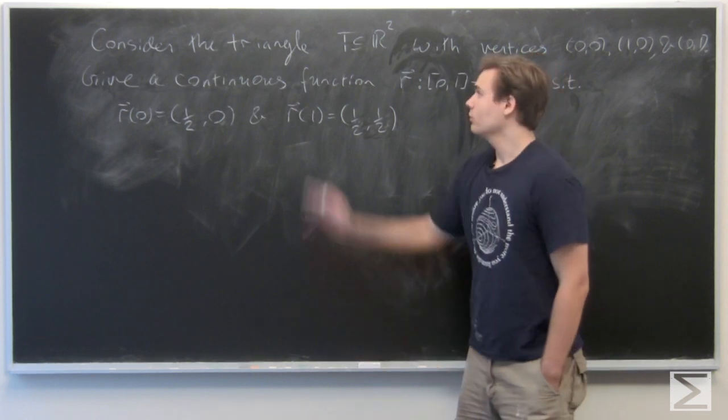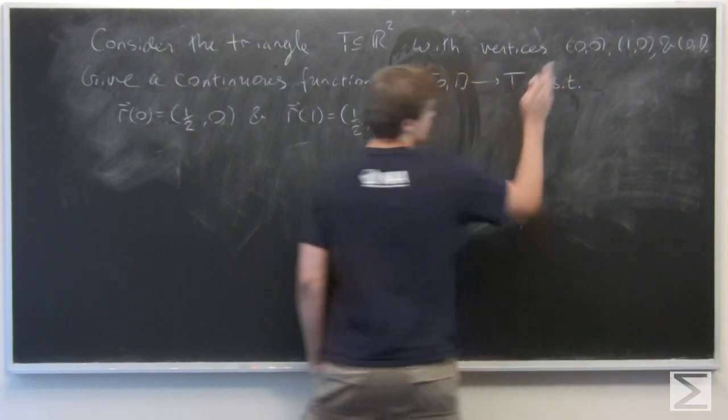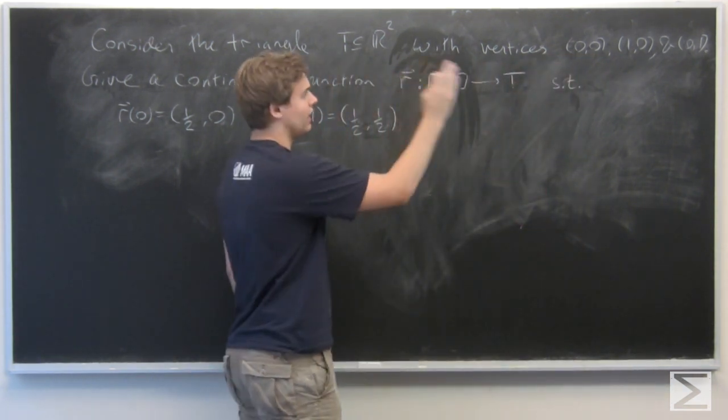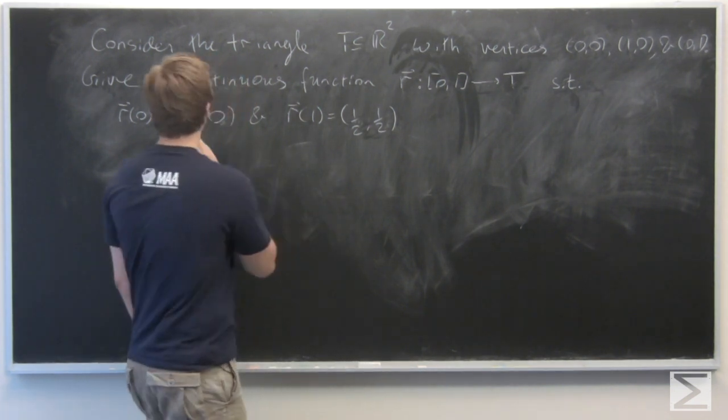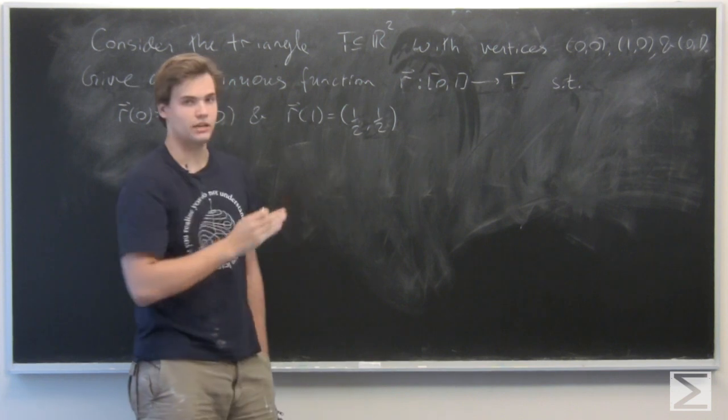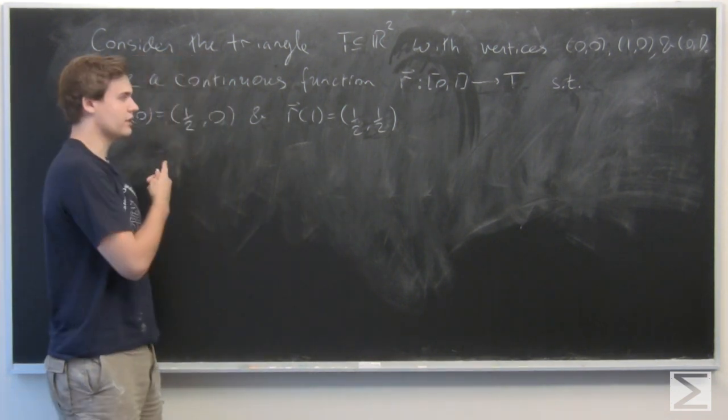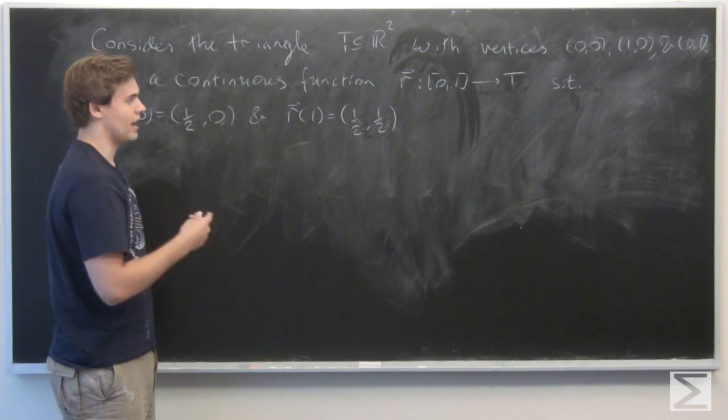In this problem, consider the triangle T as a subset of R² with vertices (0,0), (1,0), and (0,1), not filled in. We want to give a continuous function R from the unit interval [0,1] to T, such that R(0) is (1/2, 0) and R(1) is (1/2, 1/2).